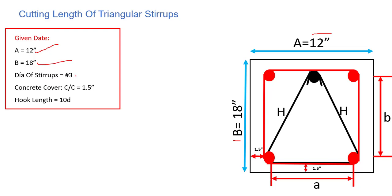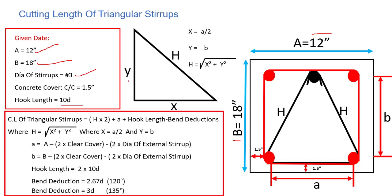The dia we are using is 3 number, the concrete cover is 1.5 inch, and the hook length is 10d. This is the given data. Now let's look at the cut length of triangular strip formula.